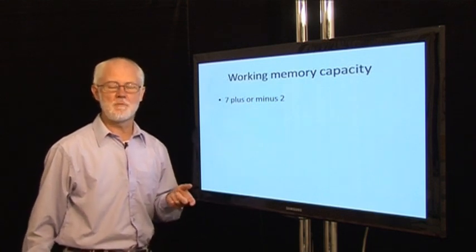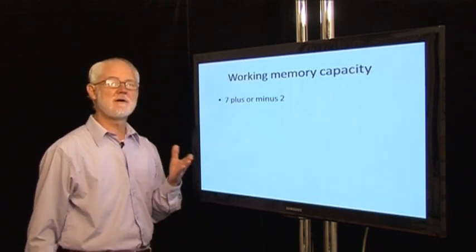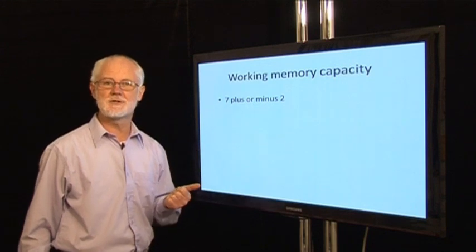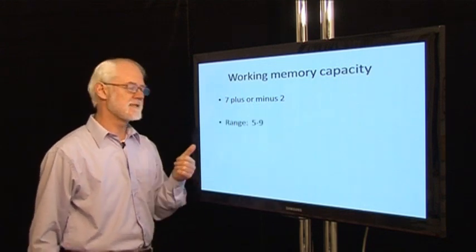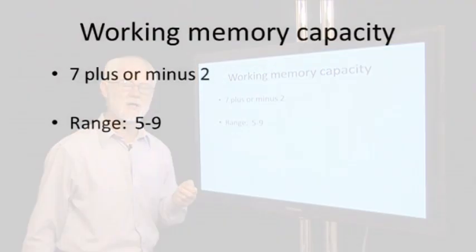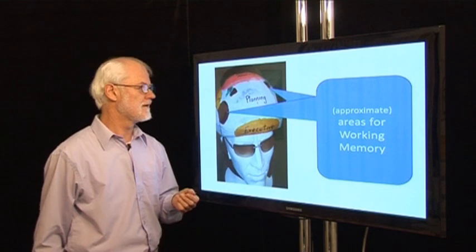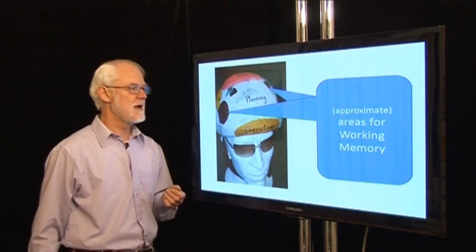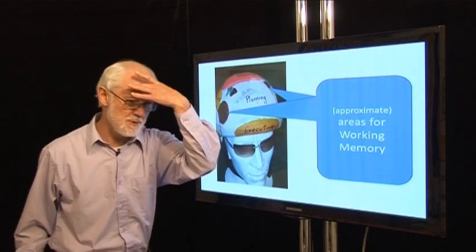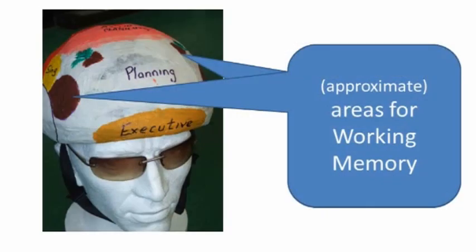When the tests are done, we find that working memory capacity is around about seven plus or minus two units. That is, it's in the range between five and nine. Working memory is more diffusely positioned in the prefrontal cortex, but it is roughly where you might hold yourself like that. Some areas on the left and some on the right.